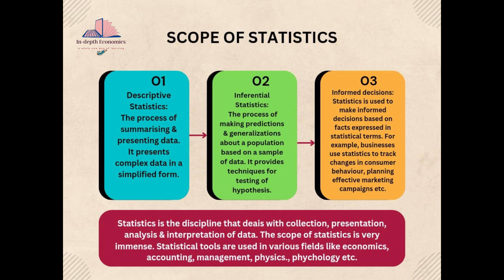First, descriptive statistics. Descriptive statistics is the process of summarizing and presenting data. It presents complex data in a simplified form. Second, inferential statistics. Inferential statistics is the process of making predictions and generalizations about a population based on a sample of data. It provides techniques for the testing of hypothesis.